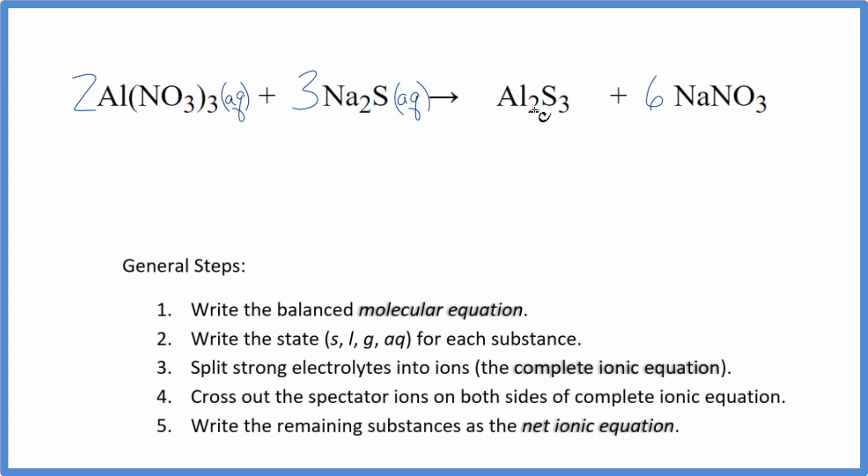We get to this aluminum sulfide. Sulfides in general, they're not soluble. There are some exceptions like sodium sulfide or potassium sulfide. But aluminum sulfide, that's insoluble. And because of that, it's going to be a solid. It won't dissolve, we just say solid.